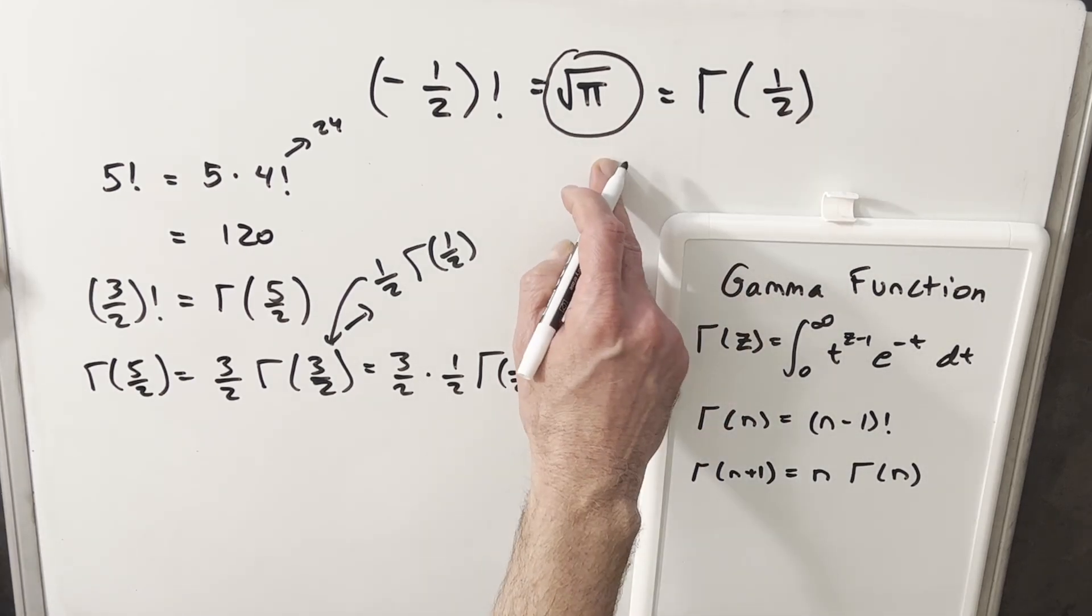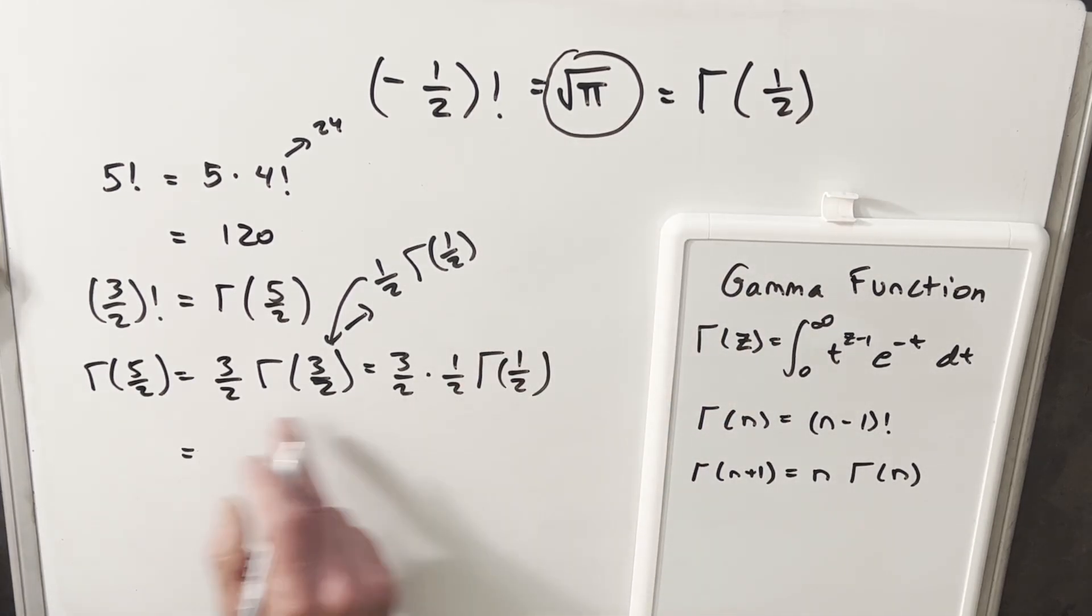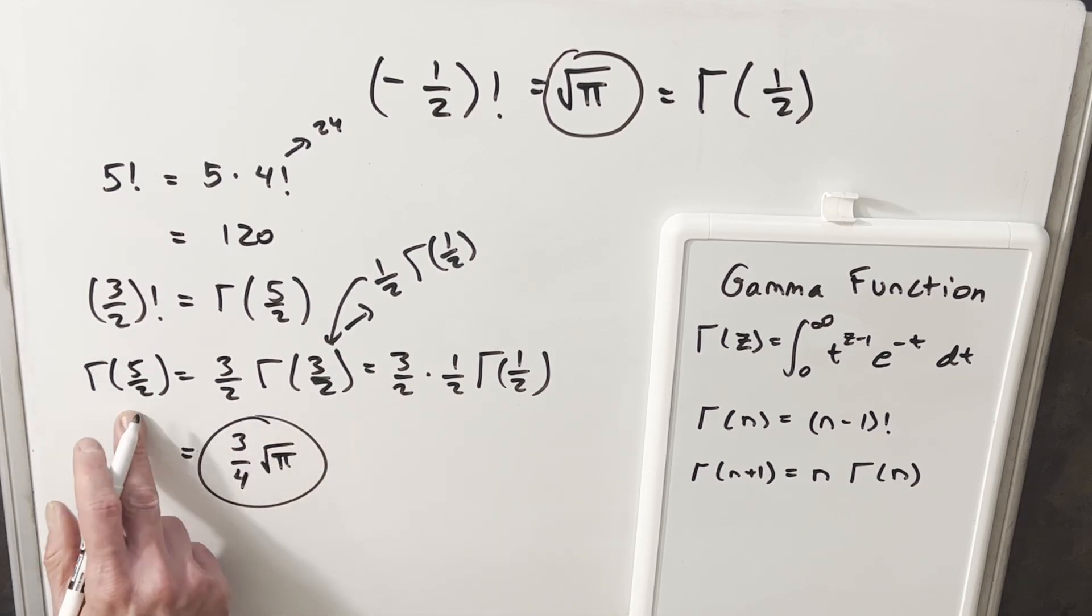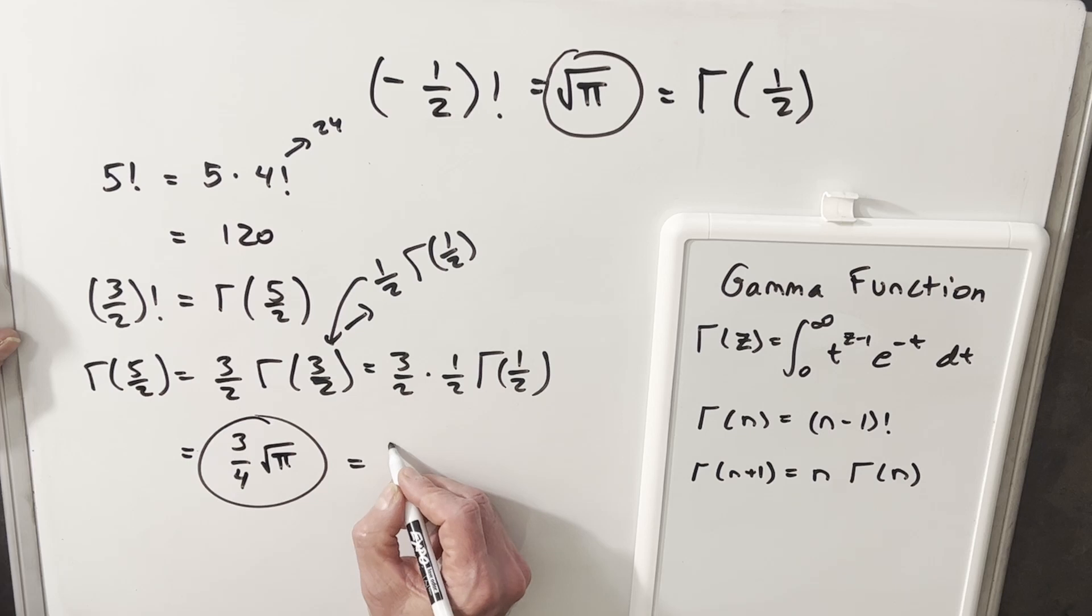But gamma of 1 half is this value that we just found. So we know for gamma of 5 halves, 3 halves times 1 half, we have 3 fourths. Gamma of 1 half is square root of pi. Okay, and we just found this other value for gamma of 5 halves, which is the same thing as 3 half factorial.